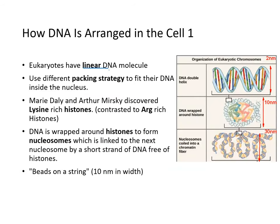Eukaryotes have linear DNA molecules, so they use a different packing strategy to fit DNA into the nucleus. Histones — lysine-rich and arginine-rich — are proteins that DNA is wrapped around, forming the nucleosome, which is linked to the next nucleosome by a short stretch of DNA free of histones. The DNA double helix is about 2 nanometers; wrapped around histones to form a nucleosome, it is about 10 nanometers, like beads on a string.